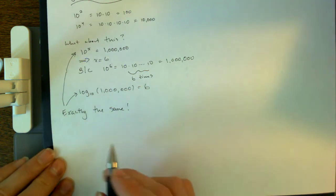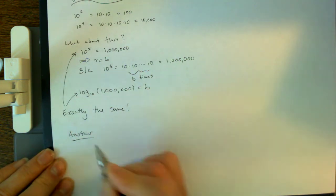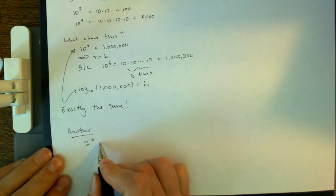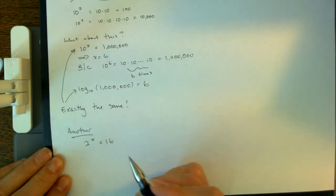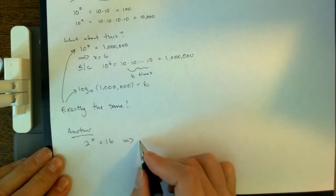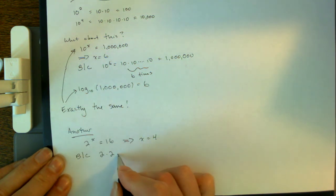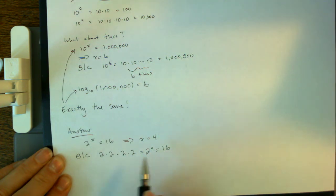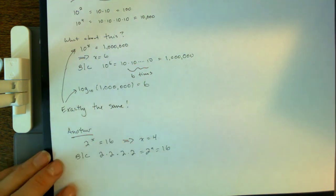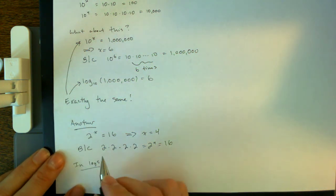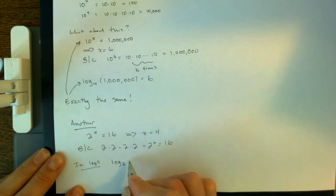Let's try another one with maybe a different base right here. Let's try base 2 right here. Let's try to answer the question, what power must I raise 2 to in order to get 16? So 2 to what power x equals 16? Well, this implies that x must equal 4. And the reason is that 2 times 2 times 2 times 2, that's 2 to the fourth power, equals 16.